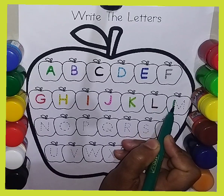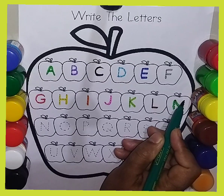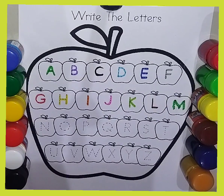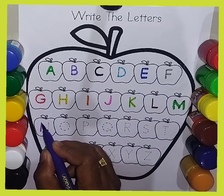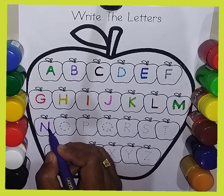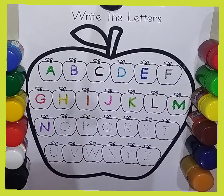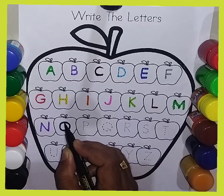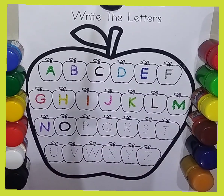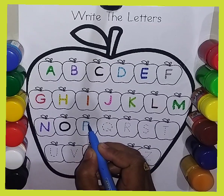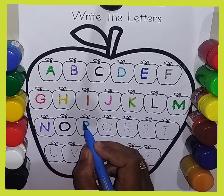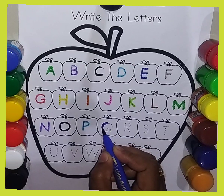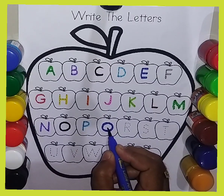M, M, M for monkey. N, N, N for nest. O, O, O for orange. P, P, P for peacock. Q, Q, Q for queen.